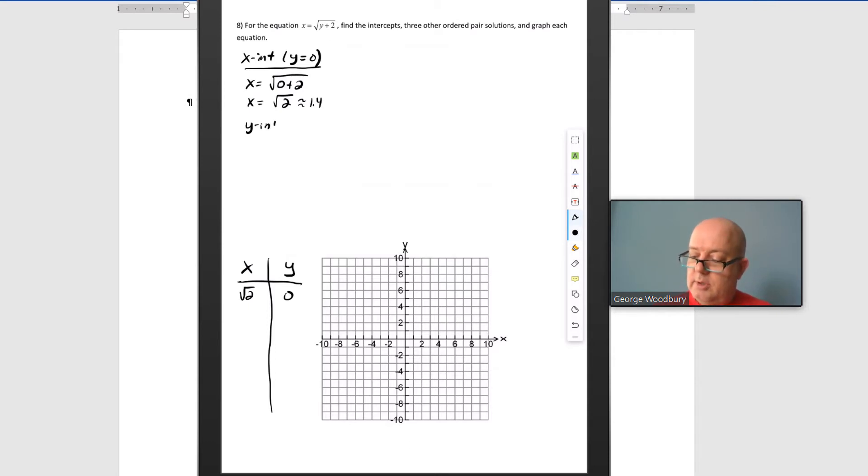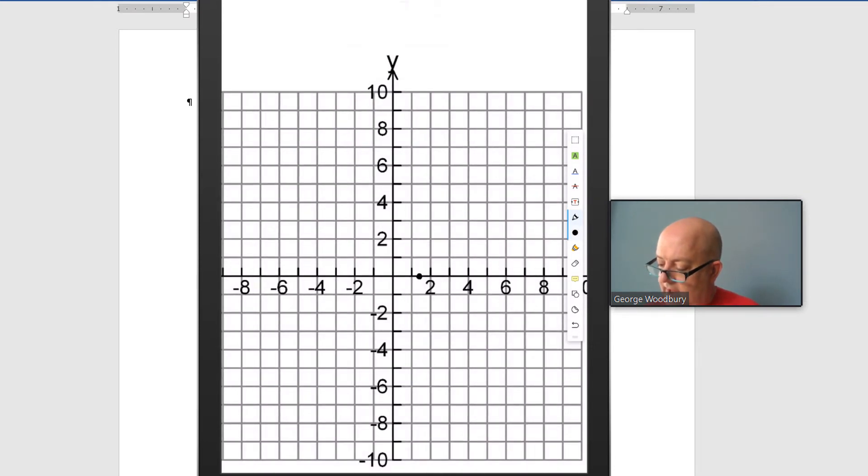Y-intercept, which is where x equals 0. 0 equals the square root of y plus 2. And we haven't learned this property to solve this, we could square both sides. 0 squared equals y plus 2 squared. 0 squared equals root y plus 2 squared. That gives us 0 equals y plus 2, or negative 2 equals y. So 0, negative 2. Let me put those two points on the graph. Square root of 2 is about 1.4, a little less than halfway between 1 and 2. And the other point was 0, negative 2.